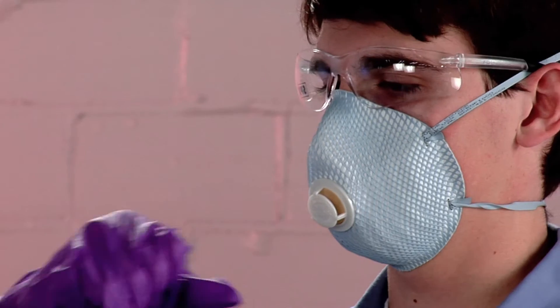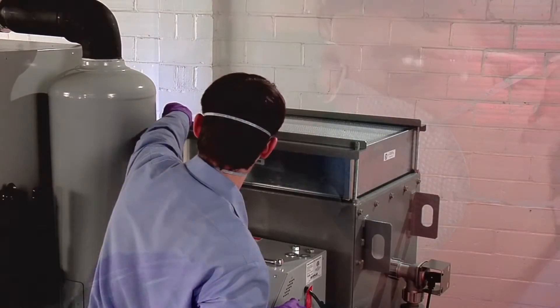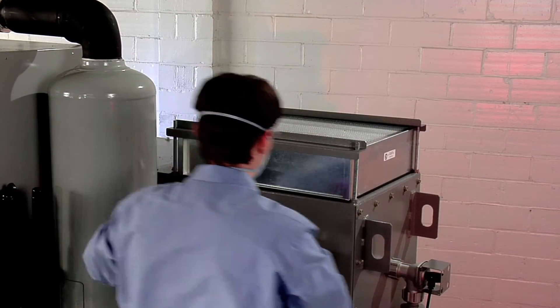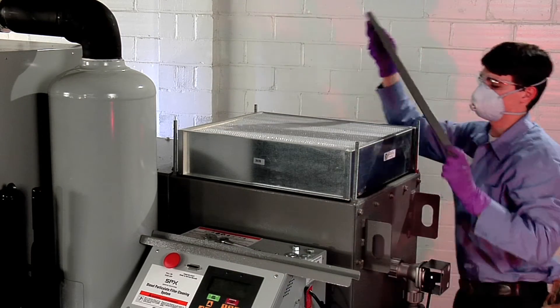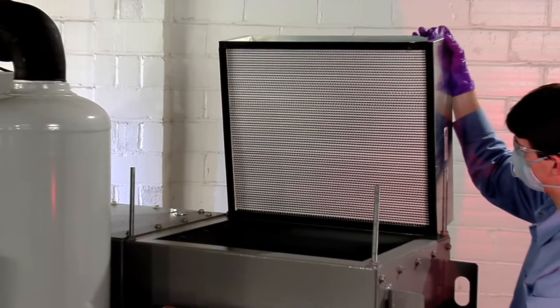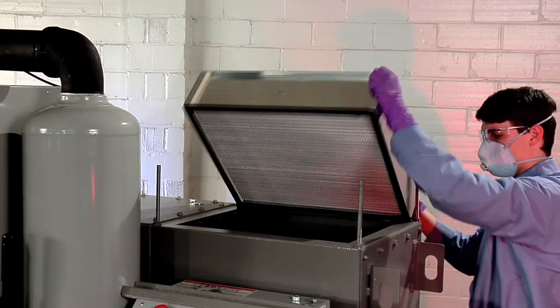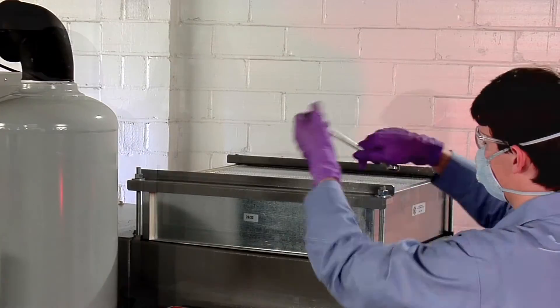Remove the nut from each corner of the HEPA filter. Lift the two Z-shaped brackets off the HEPA filter. Replace the existing filter with a new HEPA filter, gasket side down. Install the Z-shaped brackets and nuts.